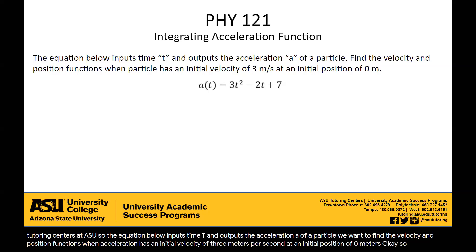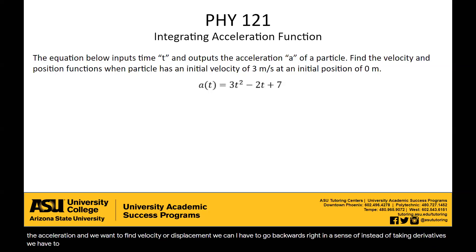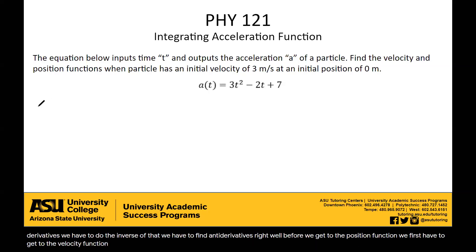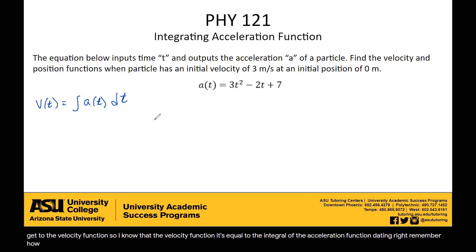If we're given the acceleration and we want to find velocity or displacement, we kind of have to go backwards. Instead of taking derivatives, we have to do the inverse of that — we have to find antiderivatives. Before we get to the position function, we first have to get to the velocity function. The velocity function is equal to the integral of the acceleration function dt. Remember how acceleration is the derivative of velocity? It's the exact opposite now — velocity is the integral of the acceleration function.